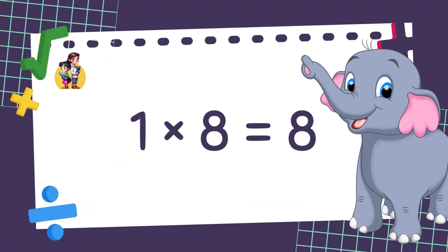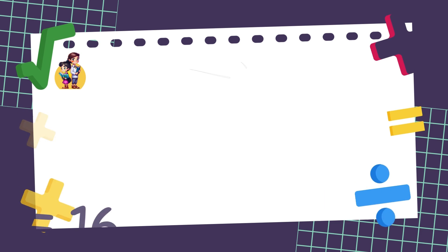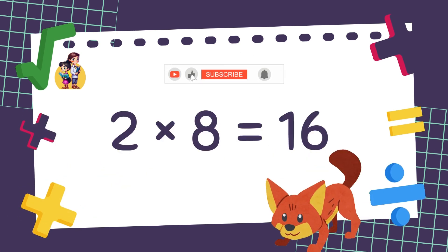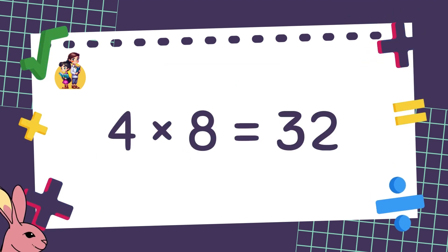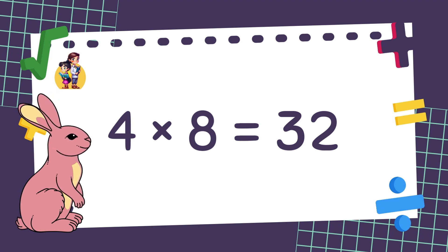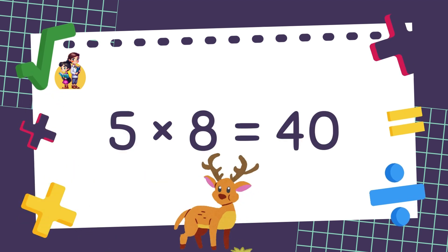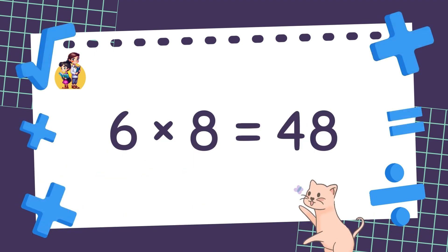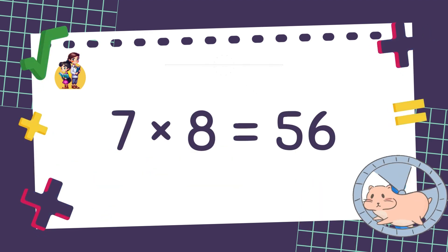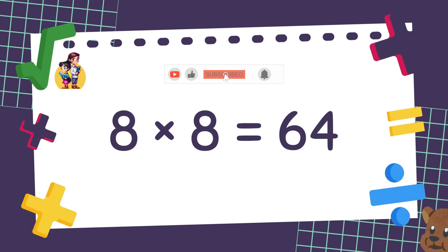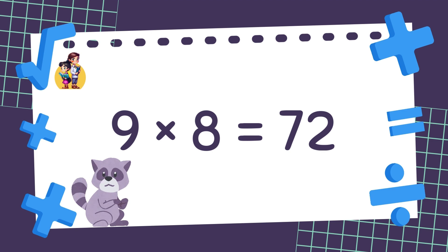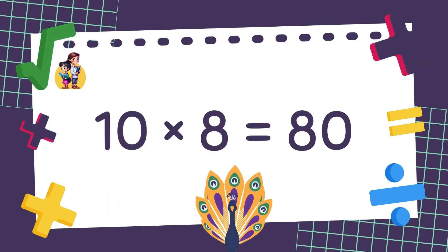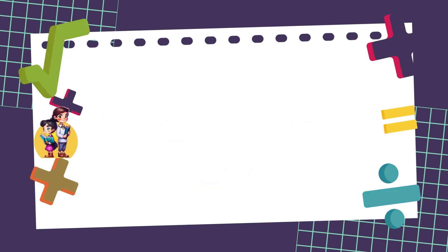1 times 8 is equal to 8. 2 times 8 is equal to 16. 3 times 8 is equal to 24. 4 times 8 is equal to 32. 5 times 8 is equal to 40. 6 times 8 is equal to 48. 7 times 8 is equal to 56. 8 times 8 is equal to 64. 9 times 8 is equal to 72. 10 times 8 is equal to 80. Well done!